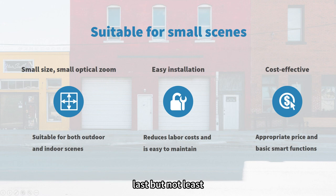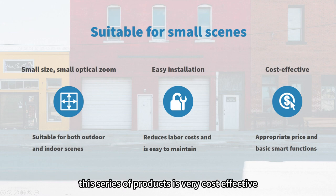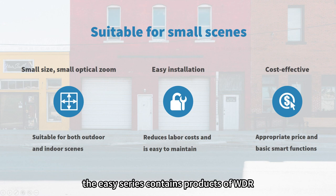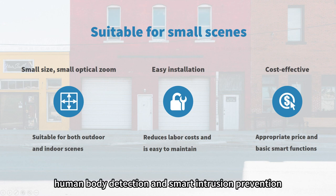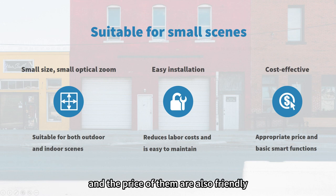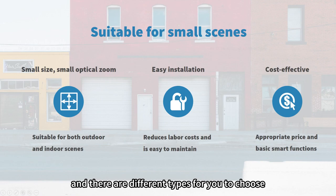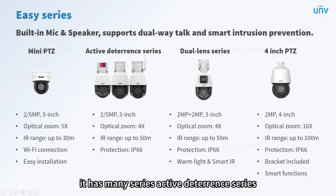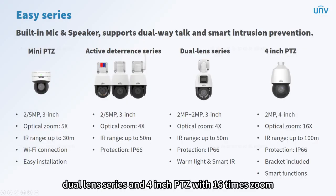Last but not least, this series is very cost-effective. The Easy series contains products with WDR, dual-way talk, human body detection, and smart intrusion prevention, all at a friendly price point. There are different types to choose from: mini series, active deterrence series, dual-lens series, and a 4-inch PTZ with 16x zoom.